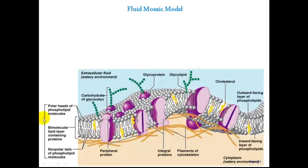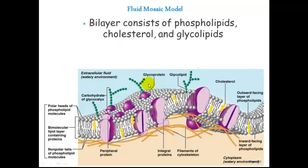If we take a look at a section of plasma membrane — imagine the cell like an orange and you've peeled off a section of that orange rind — inside is where you would have your intracellular fluid, your cytoplasm or watery environment. The outside would be your extracellular space, also a watery environment. The best model of a cell membrane is called the Fluid Mosaic Model. This Fluid Mosaic Model is a bilayer, or double layer, consisting of phospholipids, cholesterol, and glycolipids — hopefully familiar from Chapter 2, our basic and organic chemistry.